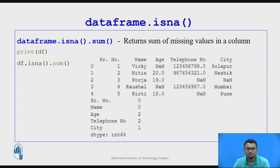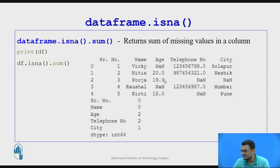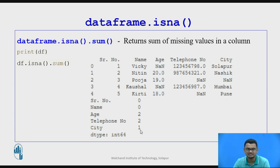Now let us see how to find the total number of missing values in a particular column. The isna().sum() routine helps us find out the number of missing values per column. In the age column we can see that two values are missing. Similarly, two values are missing in the telephone number column and one value is missing in the city column.